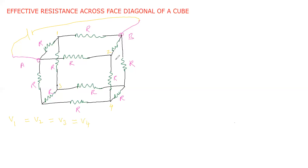Since the potential at nodes 1 and 2 are equal, we can connect them with a short-circuiting wire. Similarly, nodes 3 and 4 can be connected by a short-circuit wire. The potential difference across 1 and 3 is zero, so no current flows through that resistor. Similarly, no current flows across 2 and 4, so those resistors can be removed.